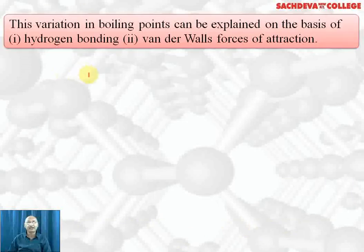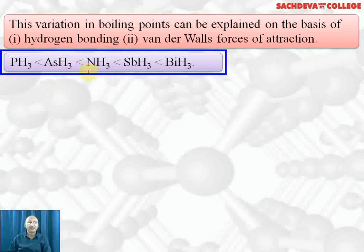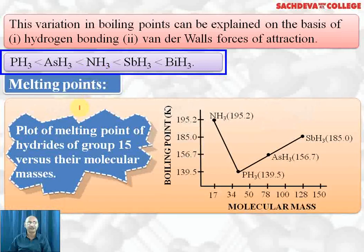The variation in boiling point can be explained on the basis of hydrogen bonding and van der Waals forces of attraction. Ammonia can form hydrogen bonds, which is why its boiling point is anomalously high. Phosphine has the lowest surface area and lowest van der Waals forces, giving it the lowest boiling point. Then comes arsine, then stibine, then bismuthine. Ammonia is in between because of additional intermolecular hydrogen bonding forces.